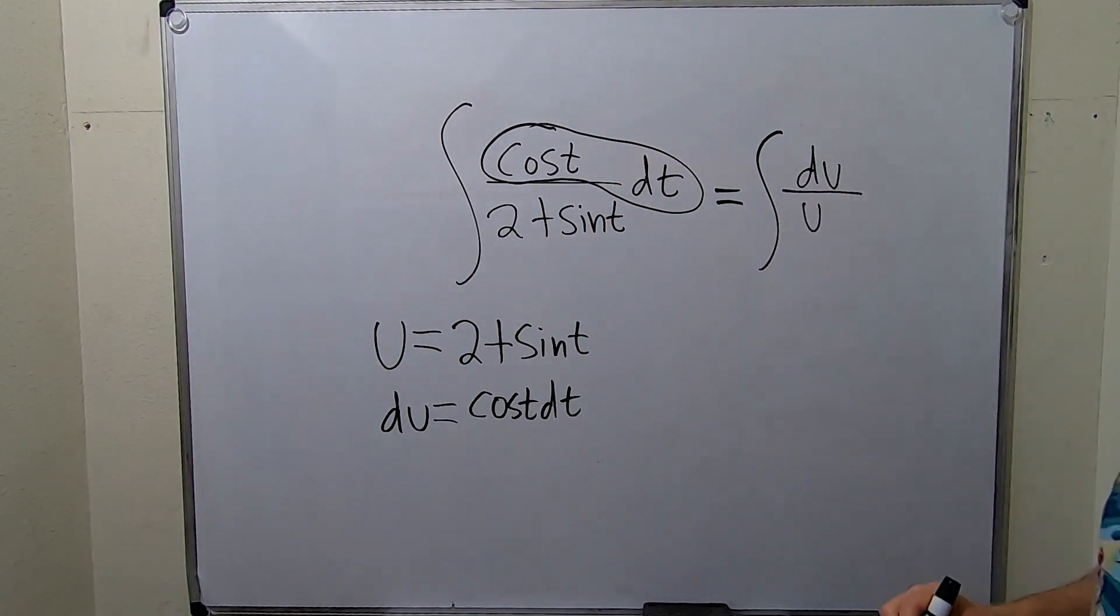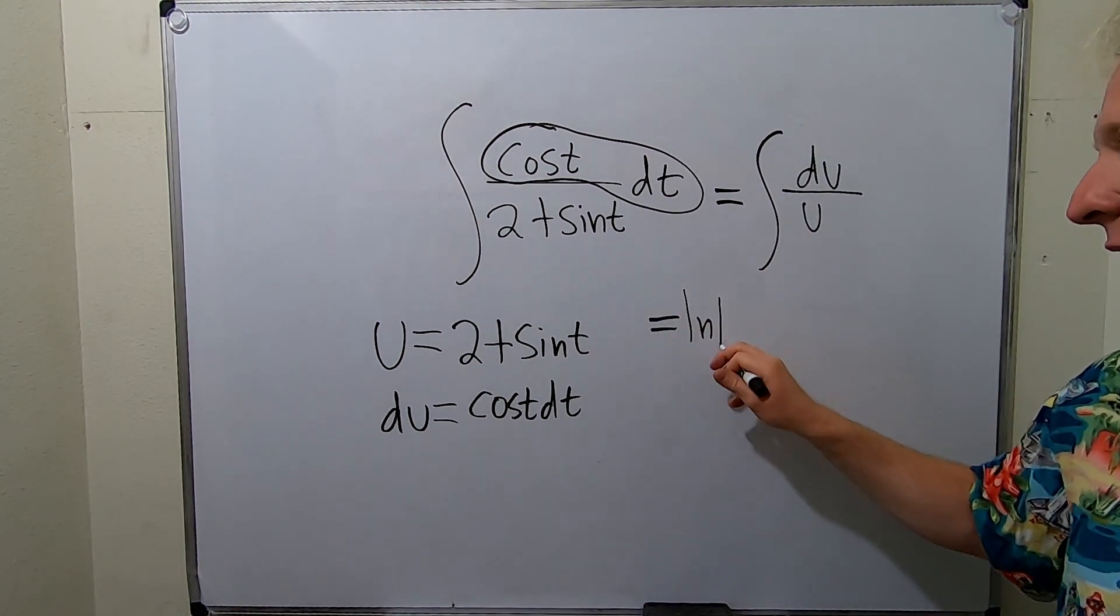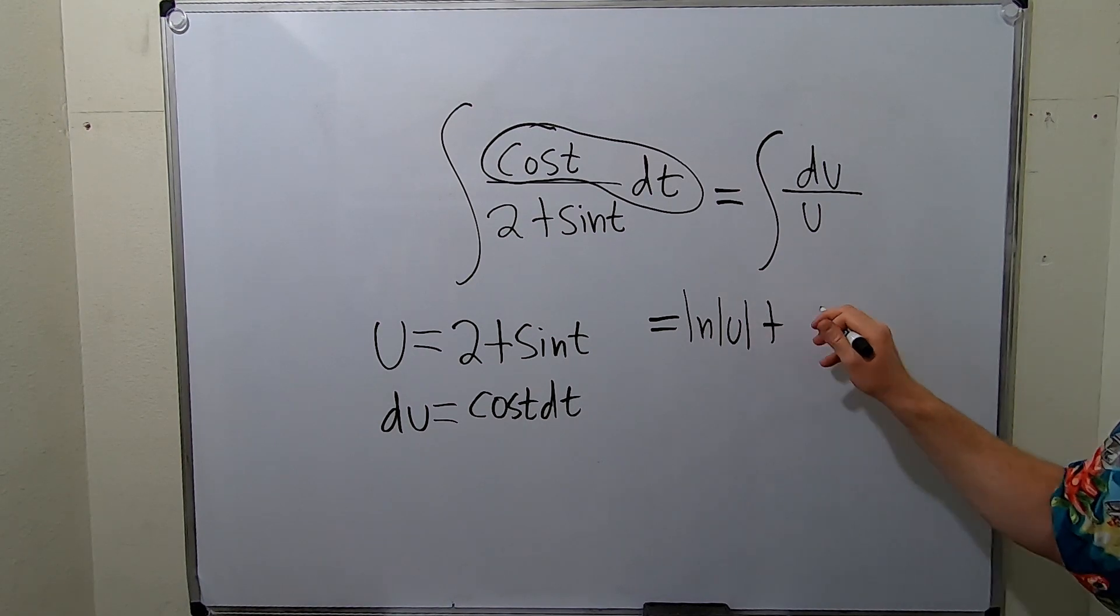And this is a super key formula. This is always equal to the natural log of the absolute value of u plus c.